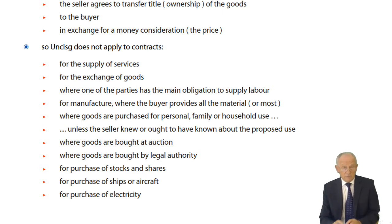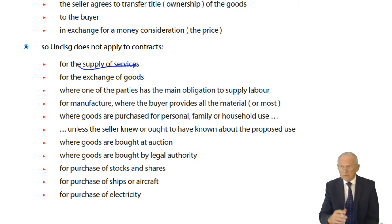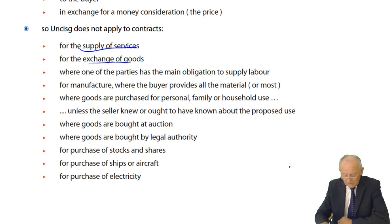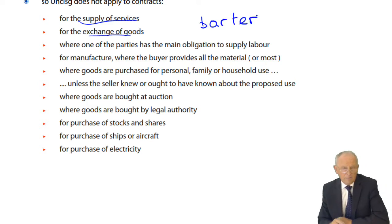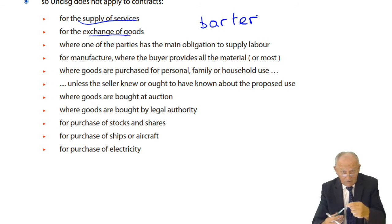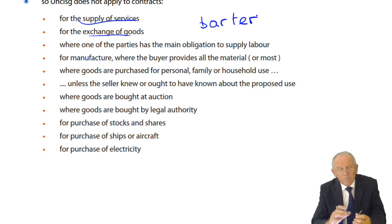That definition automatically excludes contracts for the supply of services, because services are not goods. It also excludes contracts for the exchange of goods — barter — where, for example, I transfer ownership of this pen to you and you transfer ownership of your car to me. That is a contract, but it doesn't fall into the international sale of goods because there's no money consideration.